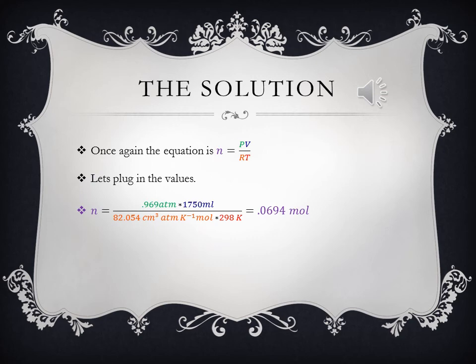Once again, the equation is n equals PV over RT. Let's plug in all the values. N equals 0.969 atm times 1,750 centimeters cubed over 82.054 centimeters cubed atm per mole Kelvin times 298 degrees Kelvin. Notice that all the terms are going to cancel until all that we are left with is moles. We'll get our final answer, which is 0.0694 moles.